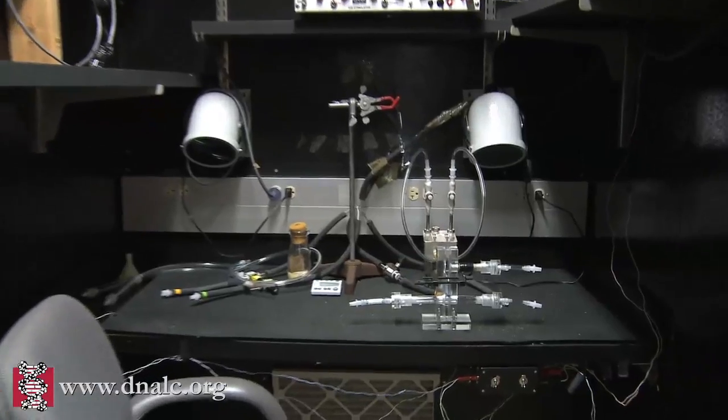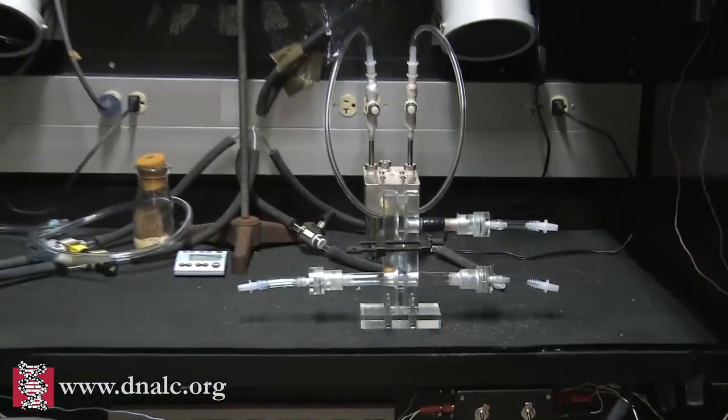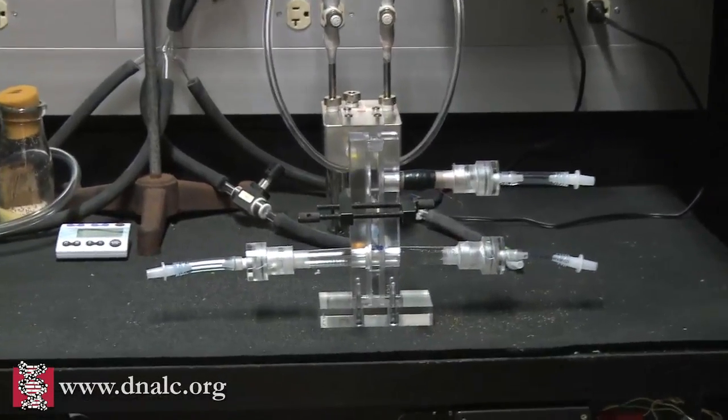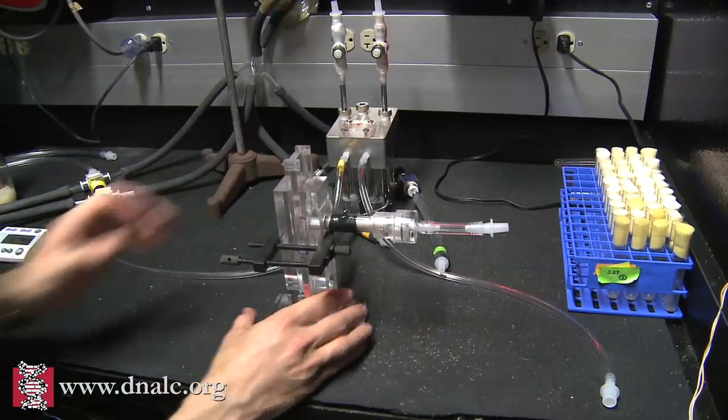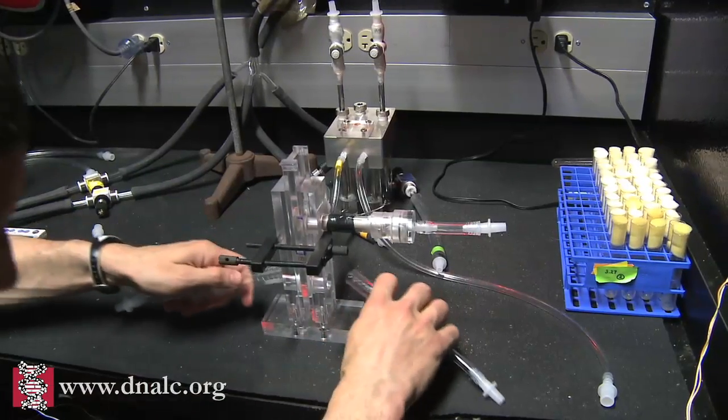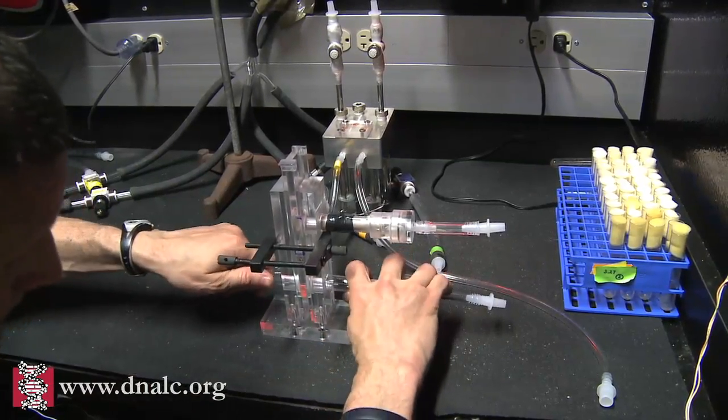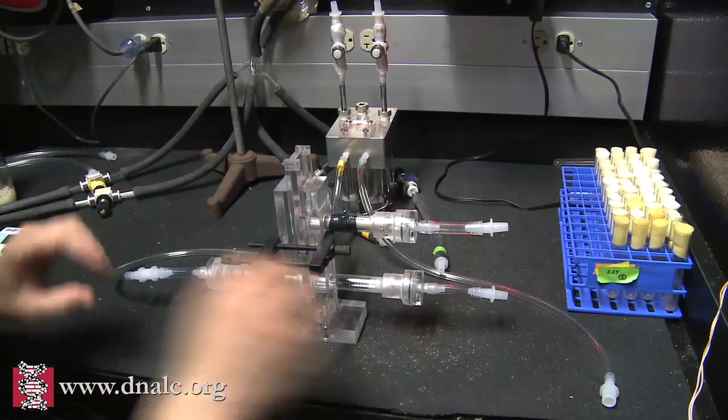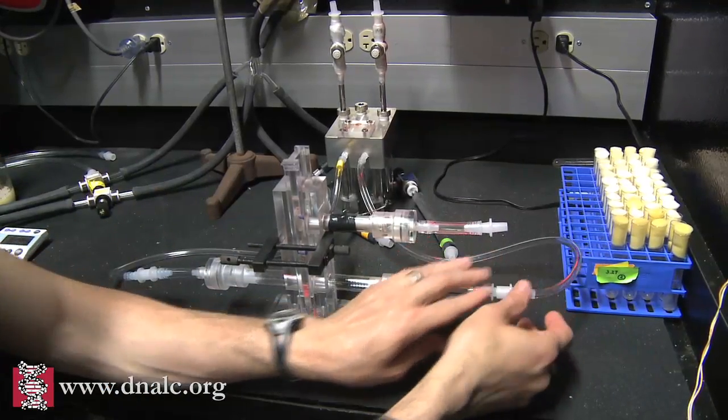So this is a T-maze. This is where we train the flies to associate an odor with an electric shock. The top part of the machine is the training chamber, and the bottom part has the T-maze where we actually let the flies make a choice between two odors.